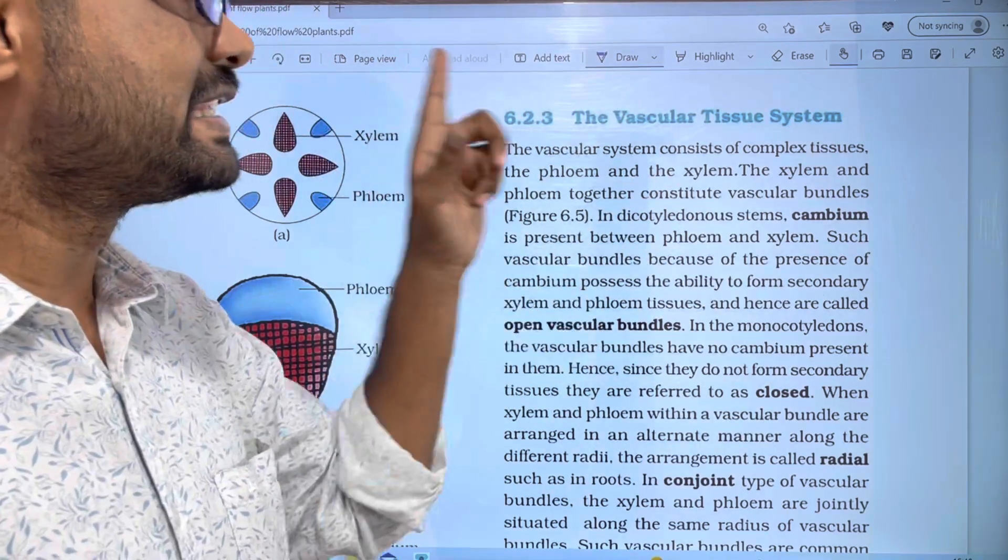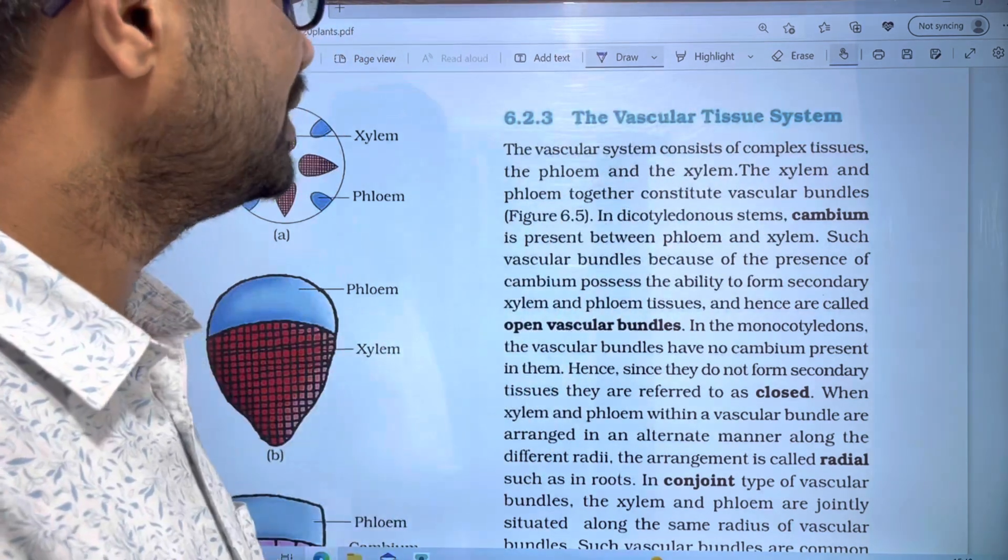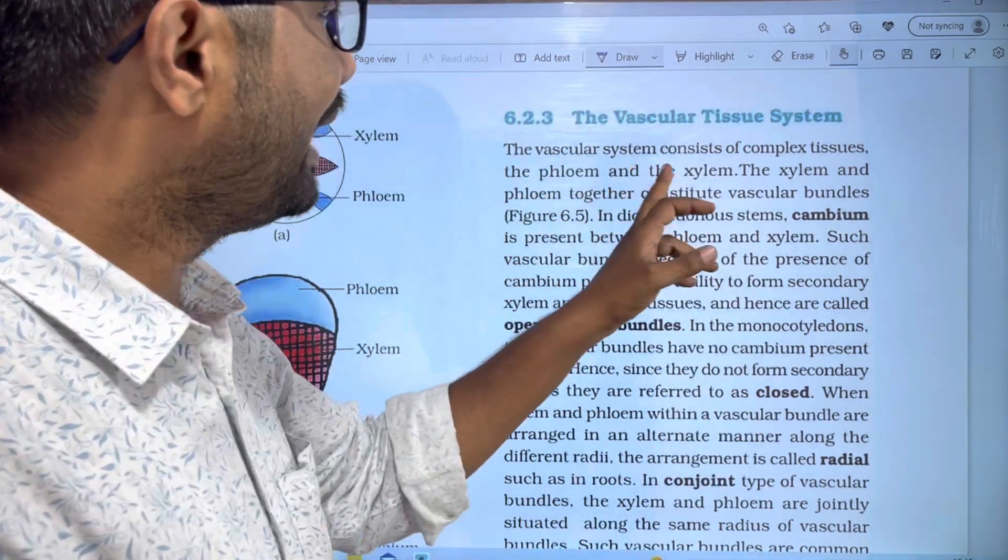This is a complex tissue system. The vascular tissue system is a complex tissue system. The complex tissue includes phloem and xylem.